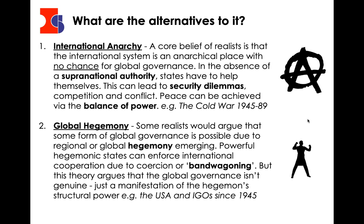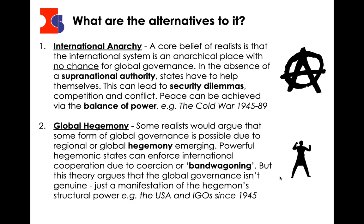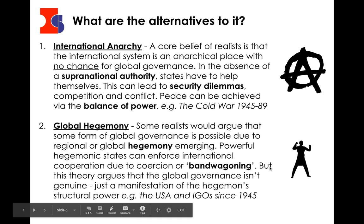The other alternative is global hegemony. Some realists would argue that some form of global governance is possible due to regional or global hegemony. Yes, the world is anarchical, but if one state becomes so big and powerful that it enforces its own rules on the rest of the globe — you could argue the USA has done that since 1945, and especially since the 1990s after the collapse of the Soviet Union. Smaller states go through a bandwagoning process where they essentially agree to what the global hegemon wants because they just want to survive. In theory, you can have a world government if one nation or group of nations becomes a hegemonic power. But that isn't genuine global governance — realists would argue that's just a manifestation of the power of one state.